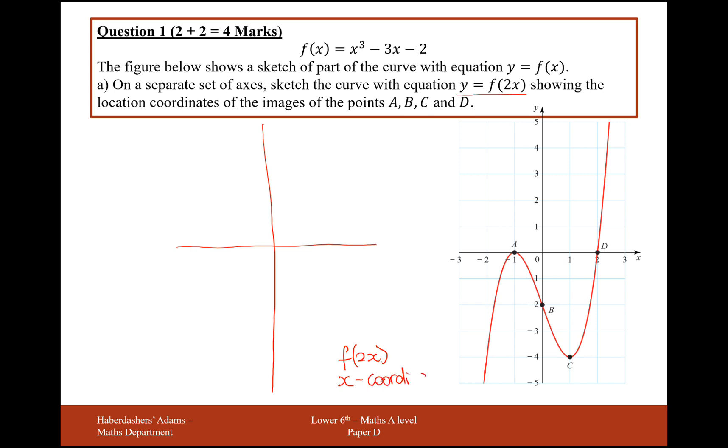If it was a multiply by 2 outside the brackets, we'd be working with the y-coordinates. And it's a scale factor enlargement because it's been multiplied. And in the brackets, it's what I refer to as opposite lands.